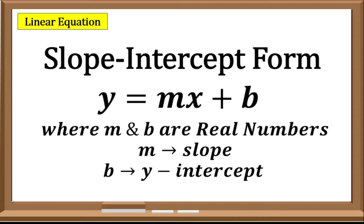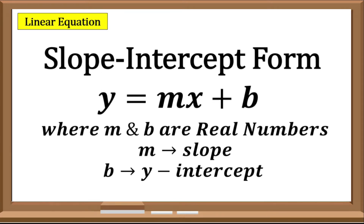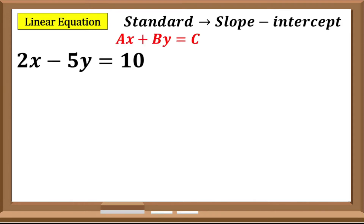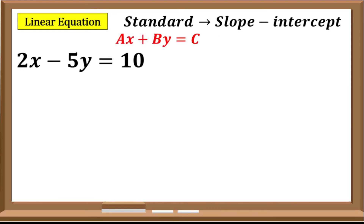Our goal here is to transform the equation from standard form to slope-intercept form. We will be using some properties that we already encountered in our previous discussion. Now let us try this example. We will be transforming first from standard into slope-intercept form. We have 2x minus 5y equals 10. Always remember that we will be transforming the standard form Ax plus By equals C into slope-intercept form y equals Mx plus B.